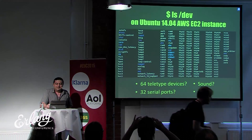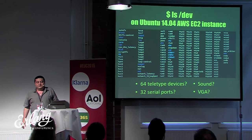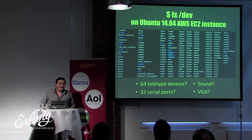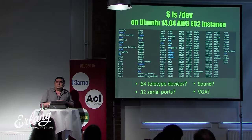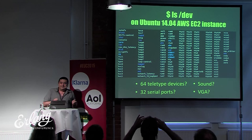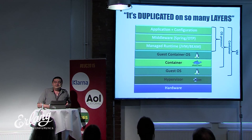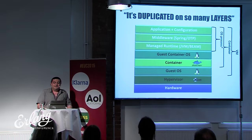I did an experiment: I launched a fresh Ubuntu 14 EC2 instance and ran `ls /dev`. I found 64 teletype devices, 32 serial ports, a sound device on the cloud — I can beep on Amazon, though I won't hear it — and a VGA device. It's legacy baggage, or in other words, a huge technical debt we're carrying year over year.